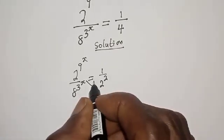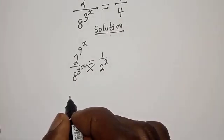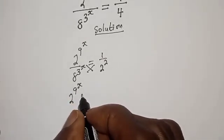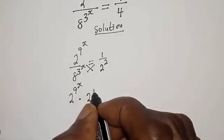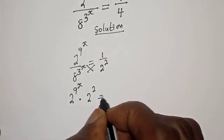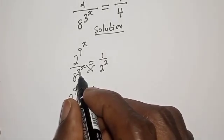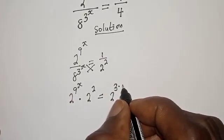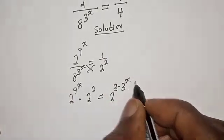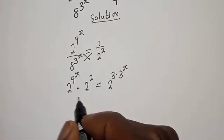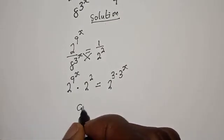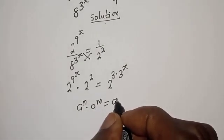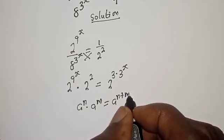Then let's cross multiply. This gives 2 raised to power 9 raised to power s multiplied by 2 raised to power 2 is equal to 8 raised to power 3 raised to power s, which can be written as 2 raised to power 3, multiplied by 3 raised to power s. Take note that a raised to power n multiplied by a raised to power m is equal to a raised to power n plus m.